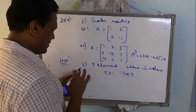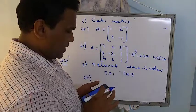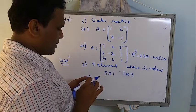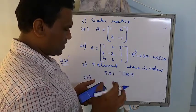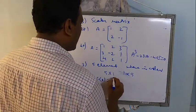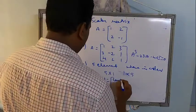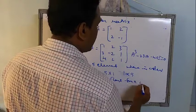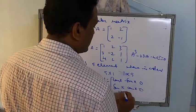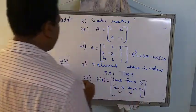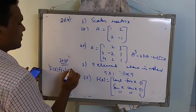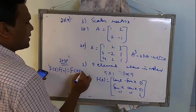Let us go to 27. In 27, a bit different one. Never asked such kind of problem but a different one. If f of x equal to cos x minus sin x 0 and the next row is going to be sin x cos x 0, 0, 0, 1. Then prove that f of x multiplied by f of y is equal to f of x plus y.